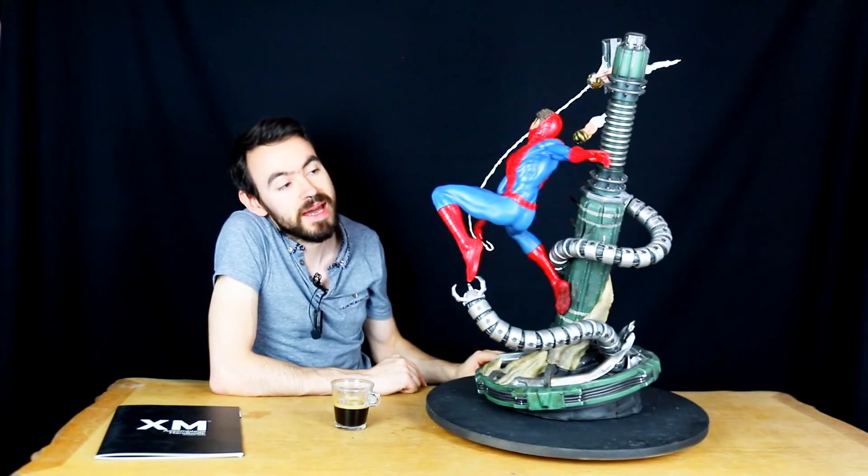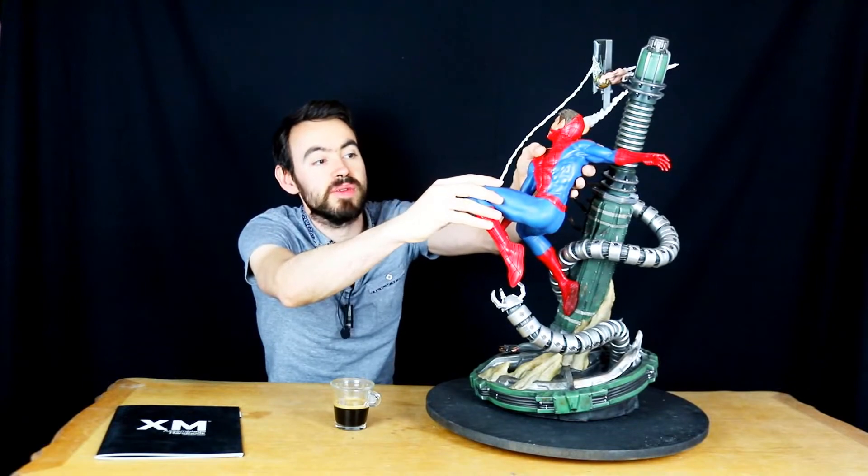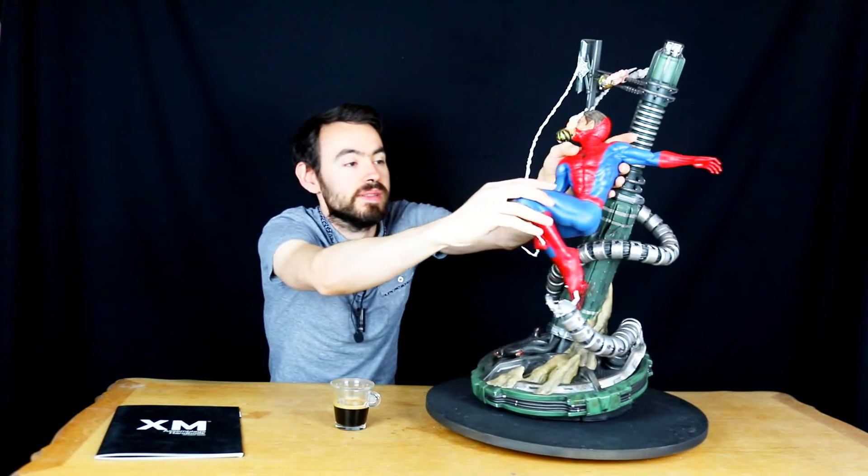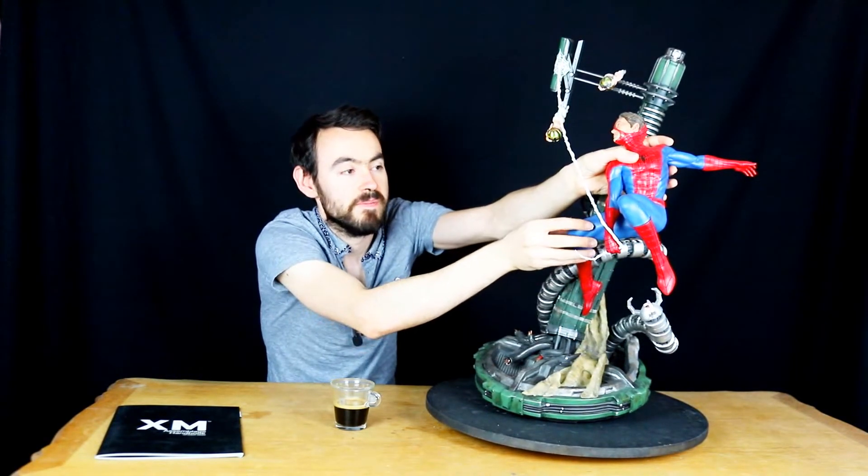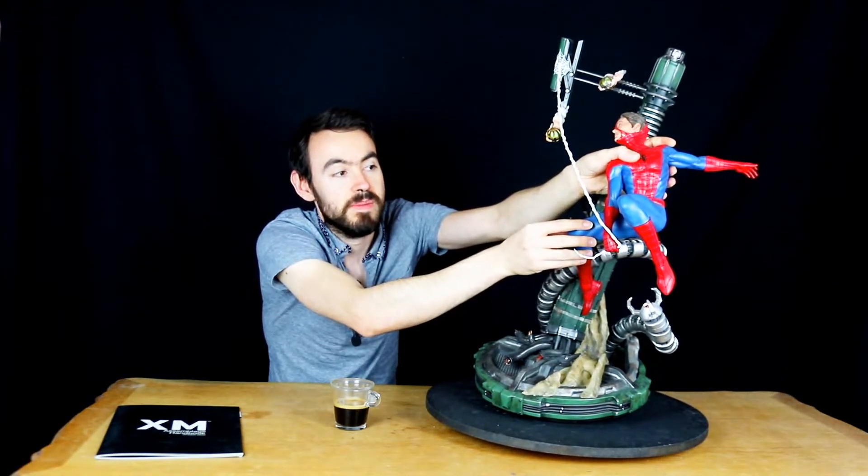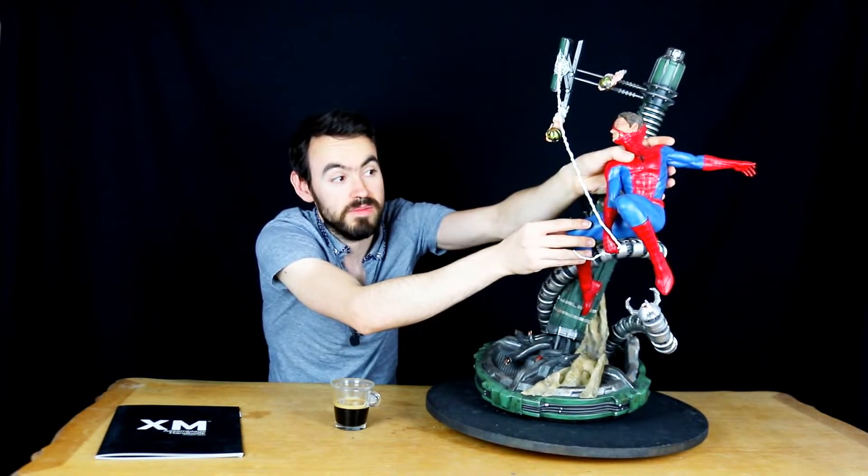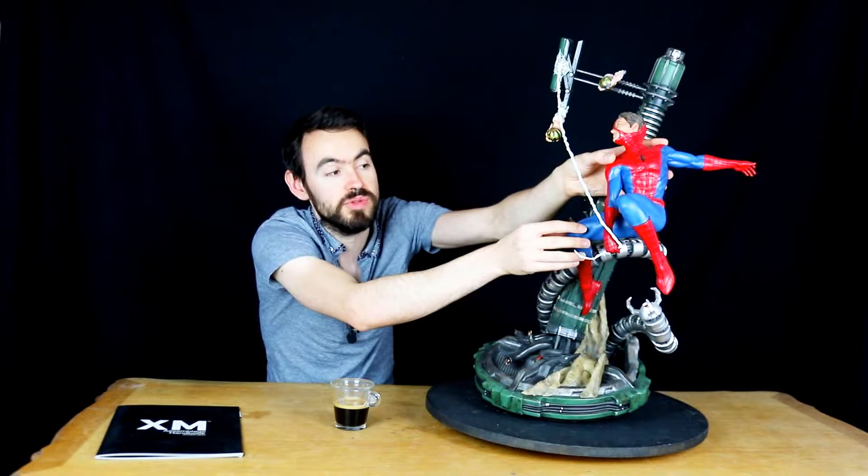Le Spider alors ça c'est un petit peu un défaut pour le coup. Je vais essayer de vous le montrer, j'ai même peur de le faire tomber. Je vais vous le montrer comme ça, je ne sais pas si vous voyez, il est juste posé là. C'est à dire il y a un aimant mais il n'est pas du tout clipsé. Donc là si je le pousse en arrière il tombe clairement. Il est posé vraiment, le buste est posé sur les jambes. Donc ça je trouve pour le coup c'est quand même très très dangereux.